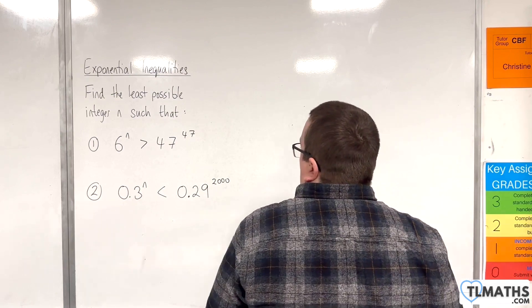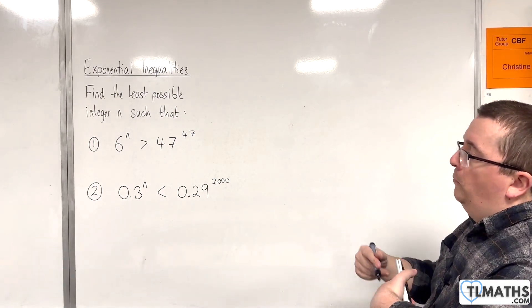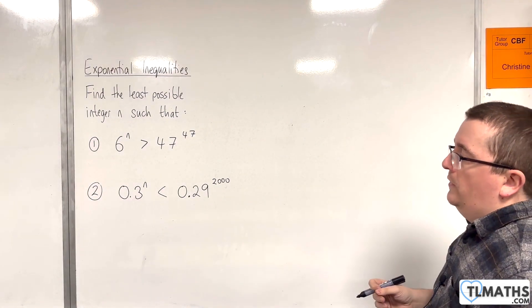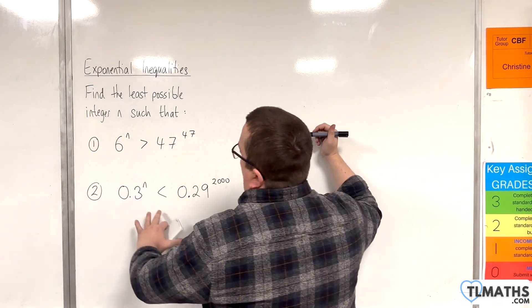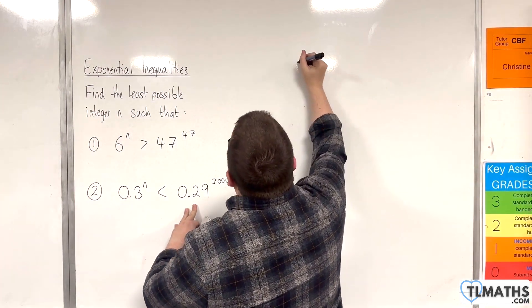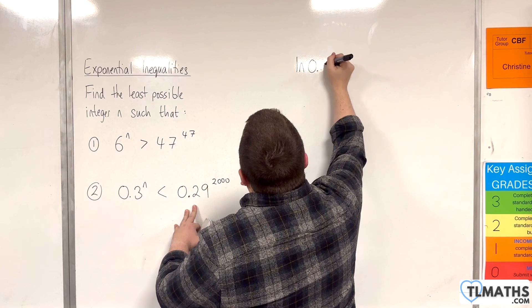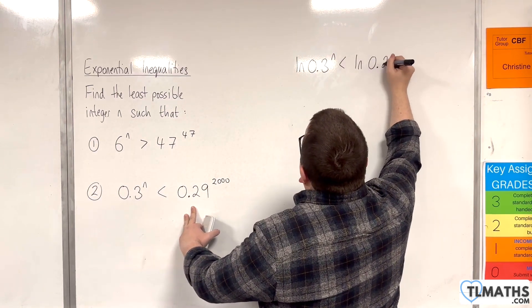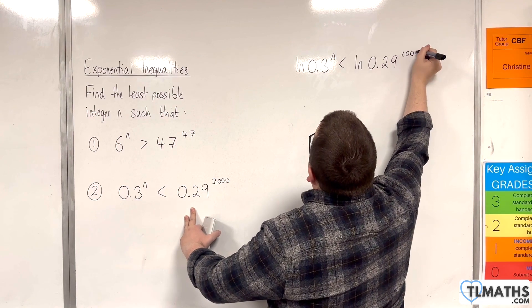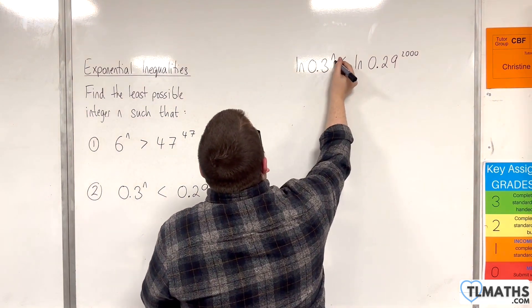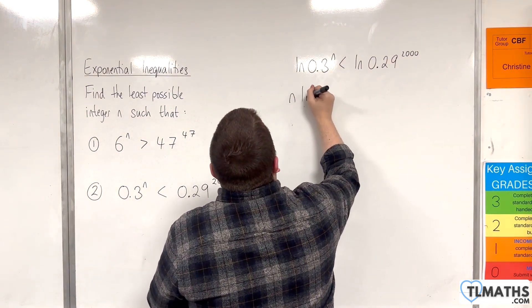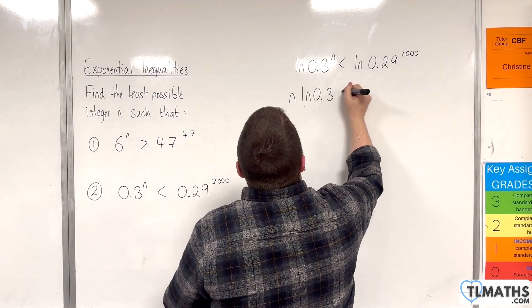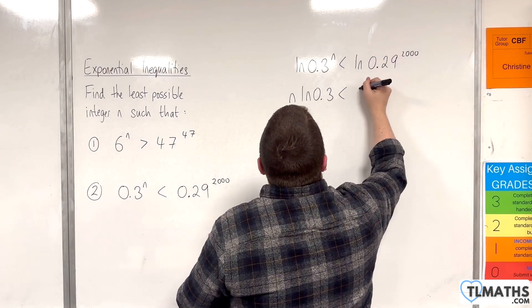0.3 to the n is less than 0.29 to the 2000. I'm going to take the natural logarithm of both sides. Then use the power rule, bring the n down to the front, and bring the 2000 down to the front.